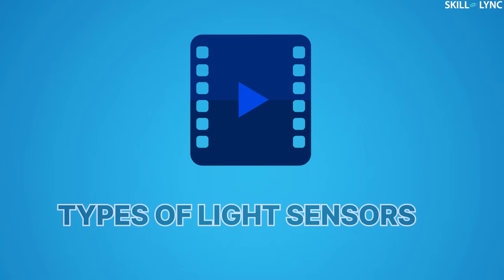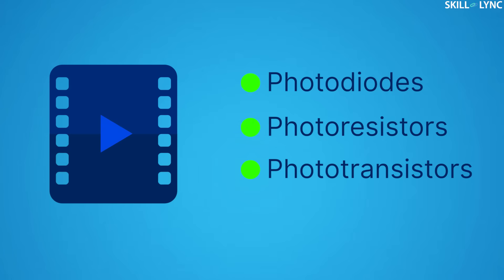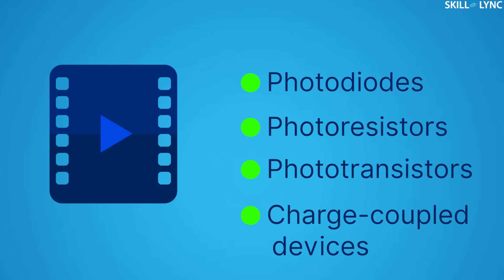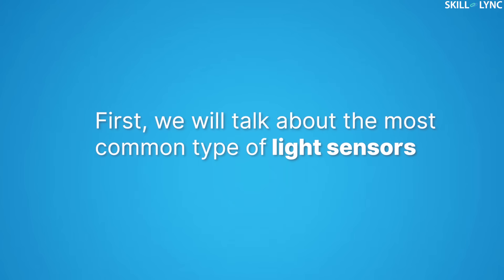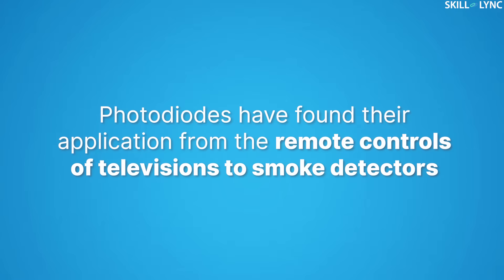In today's video we'll be discussing a few common types of light sensors: photo diodes, photo resistors, photo transistors, and charge coupled devices. First we'll talk about the most common type of light sensor — the photo diode.